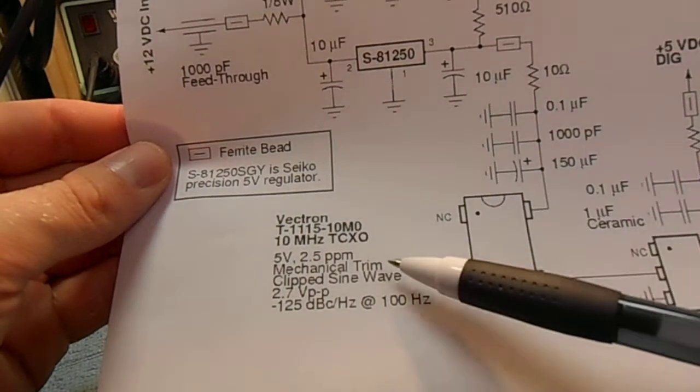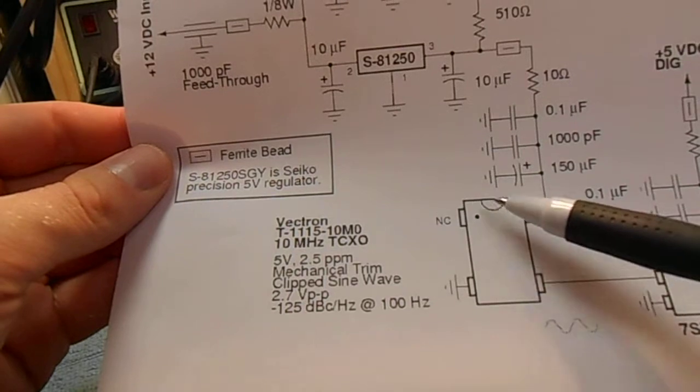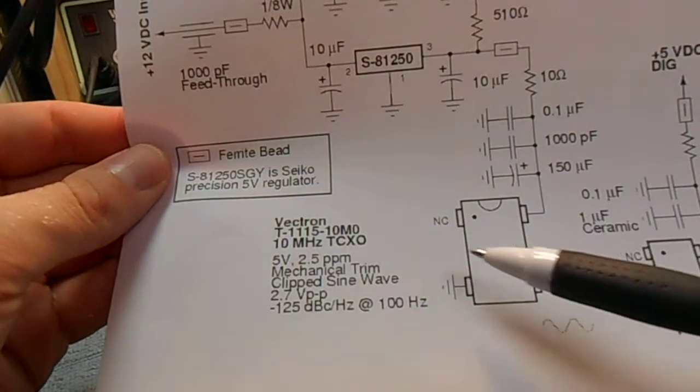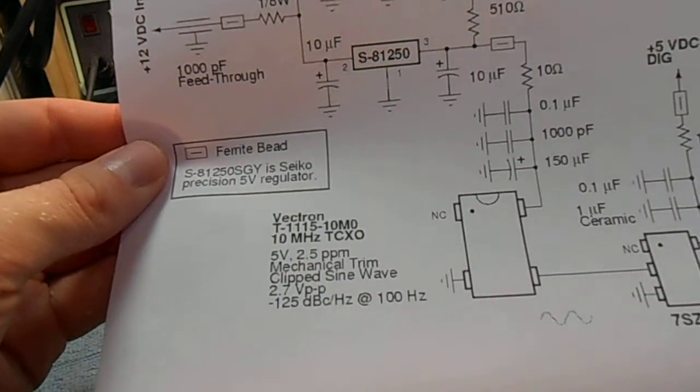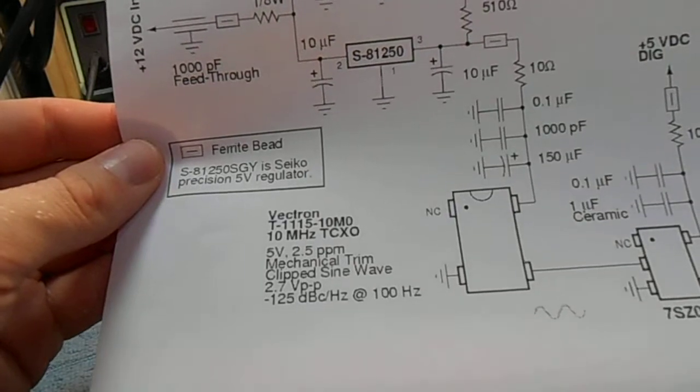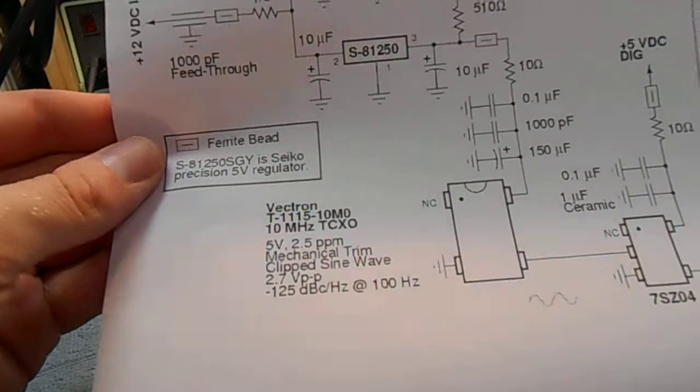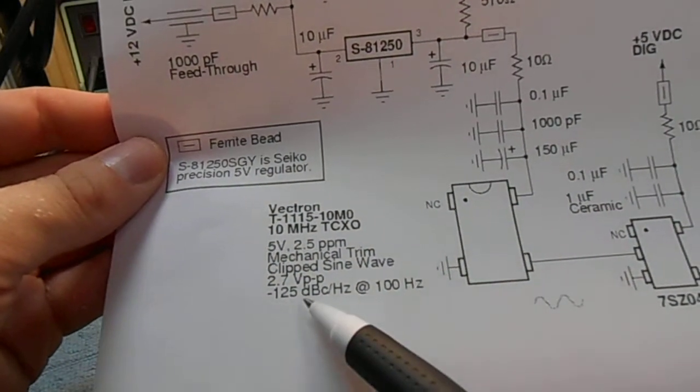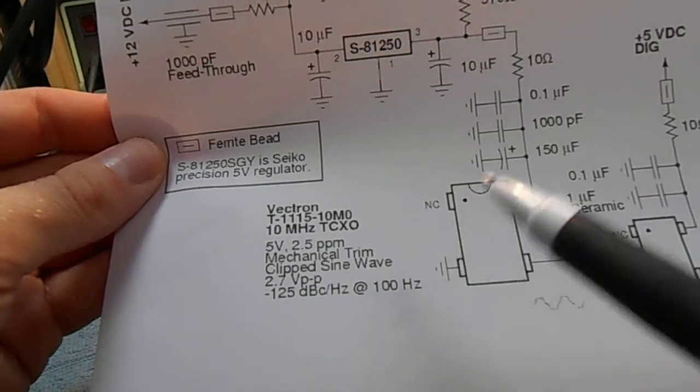It operates at 5 volts, has a mechanical trim, which is going to be a little bit of a problem. I'll show you later. The output is standard clipped sine wave at about 2.7 volts peak to peak. It has really good phase noise, negative 125 dbc per hertz at 100 hertz offset.